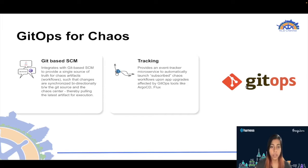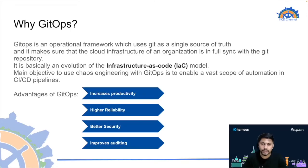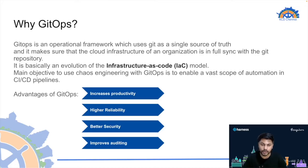Now Amit will talk about GitOps in more detail and give the demo. GitOps is basically an operational framework which uses Git as a single source of truth — any change in the code or in the Git repository needs to be fully synced with the cloud infrastructure of the organization. It follows the principle of infrastructure as code, where managing and provisioning of infrastructure is done through code rather than manual processes.